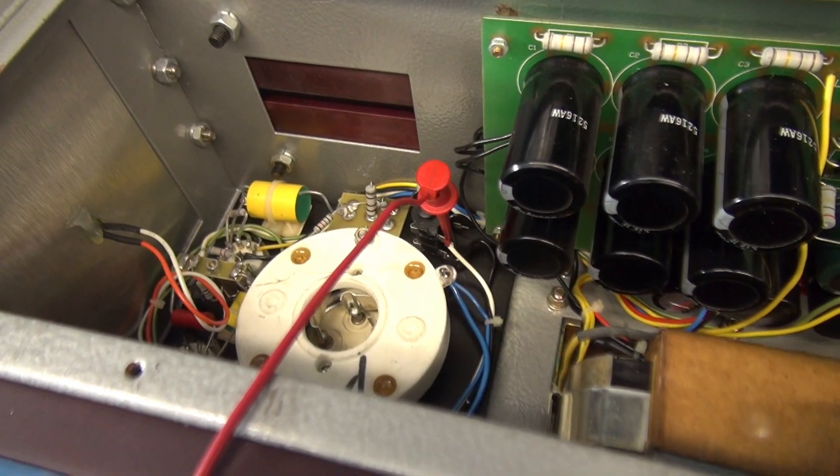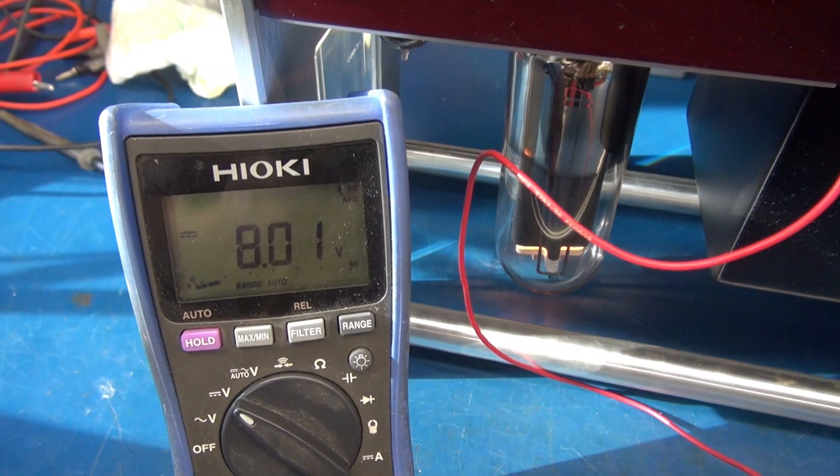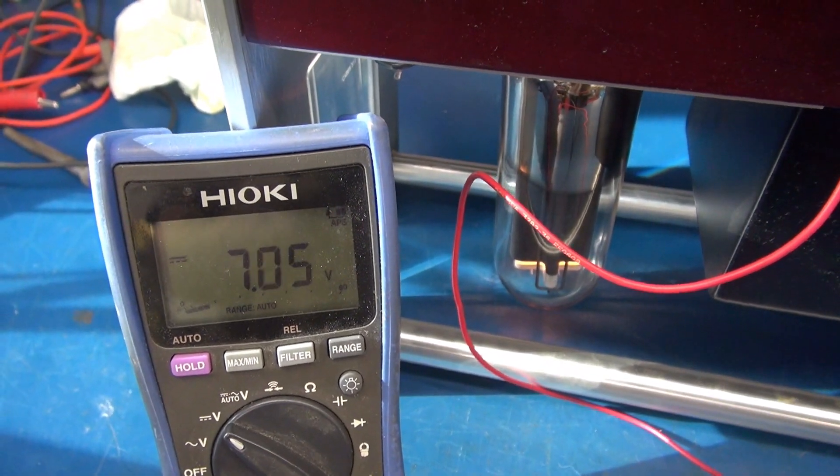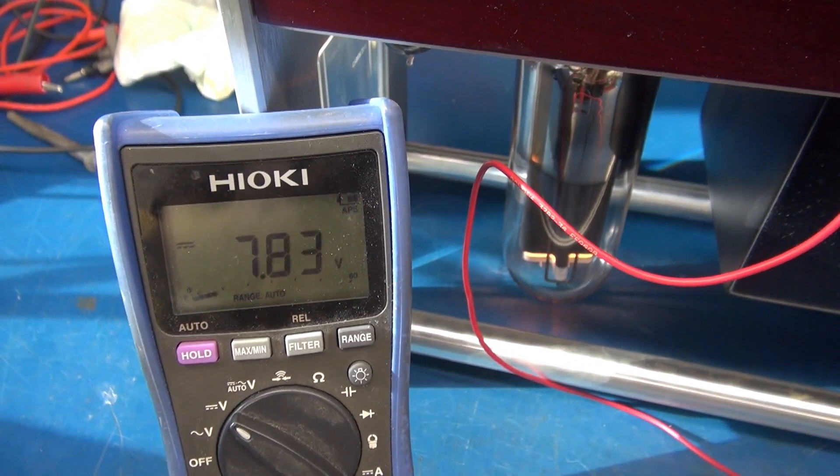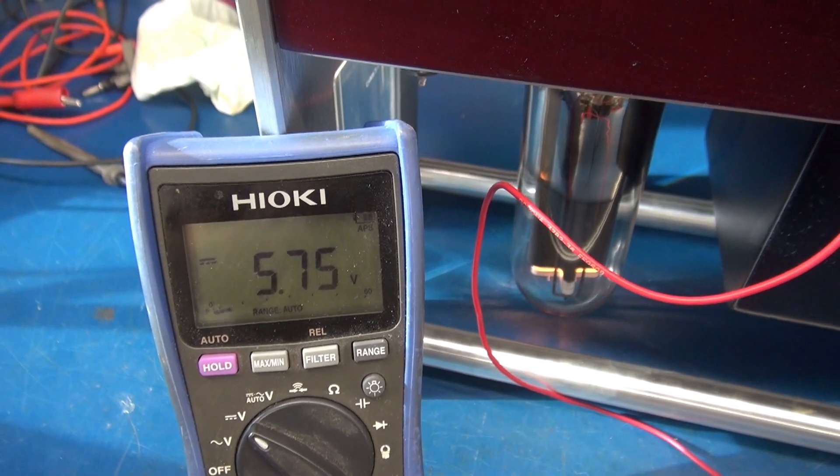Alright, now I've clipped onto the bias test point. According to the schematic, it should be approximately 4.8 volts. It looks a little high, but at least we have bias voltage.